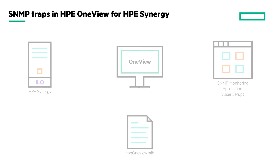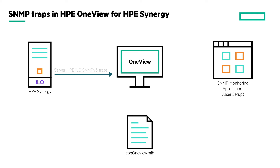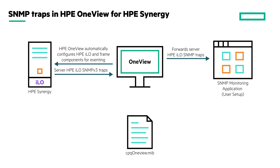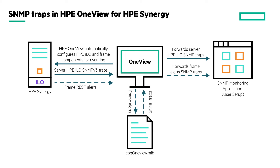For the Synergy version of HPE OneView, apart from the traps from HPE iLO, HPE OneView automatically configures the Synergy Frame components to send REST events to the Composer. HPE OneView converts the Synergy Frame REST alerts to SNMP traps as defined in the MIB file and then forwards these traps to your SNMP monitoring application. You can also configure the interconnects to send traps in the Logical Interconnect configuration page.